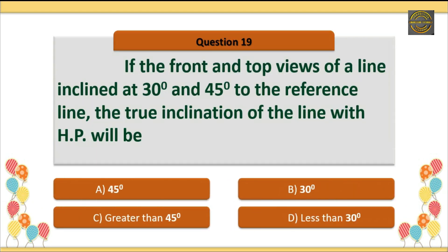Question 19: If the front and top views of a line are inclined at 30 degrees and 45 degrees to the reference line, the true inclination of the line with HP will be? Option D is correct: Less than 30 degrees.